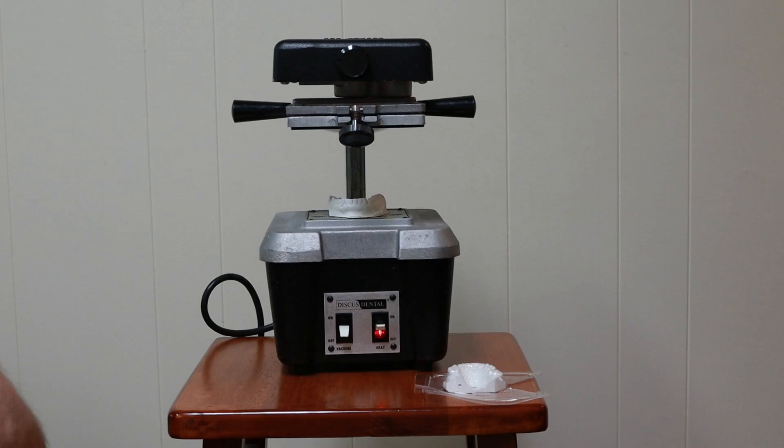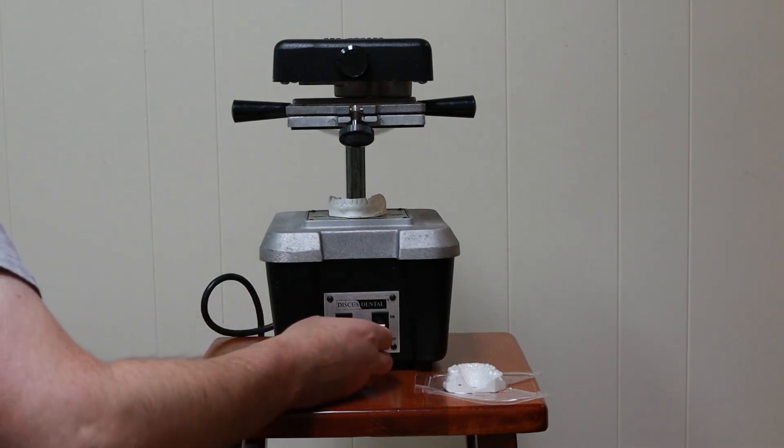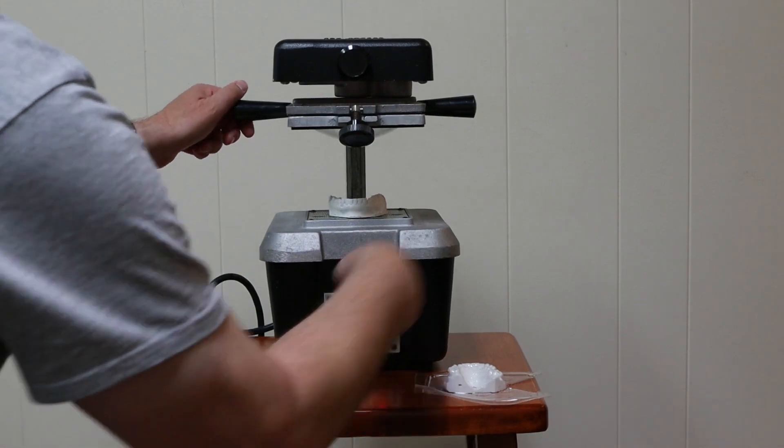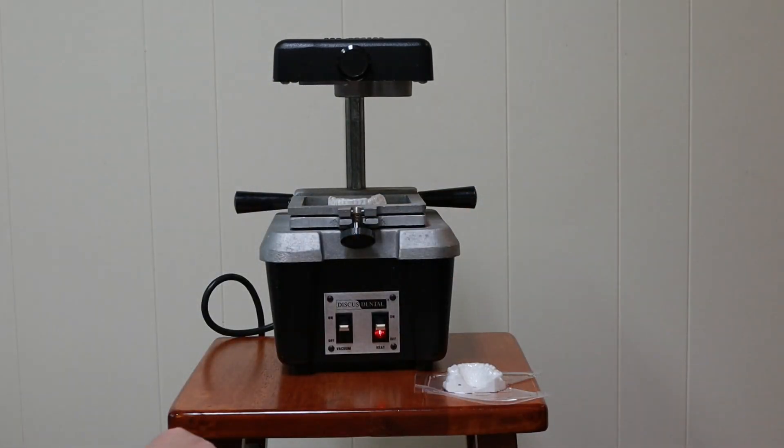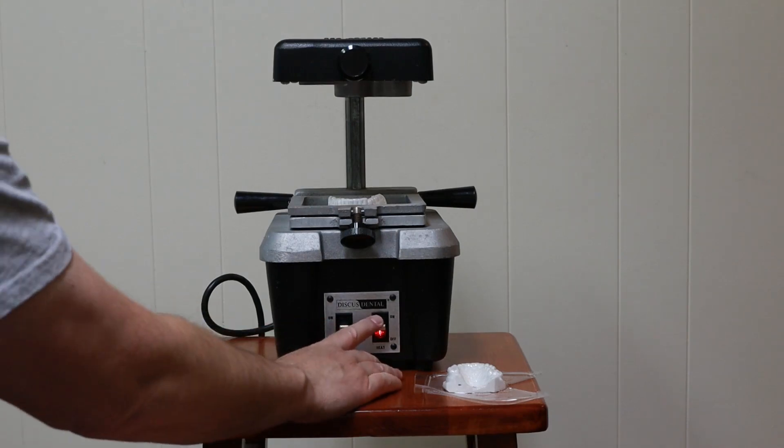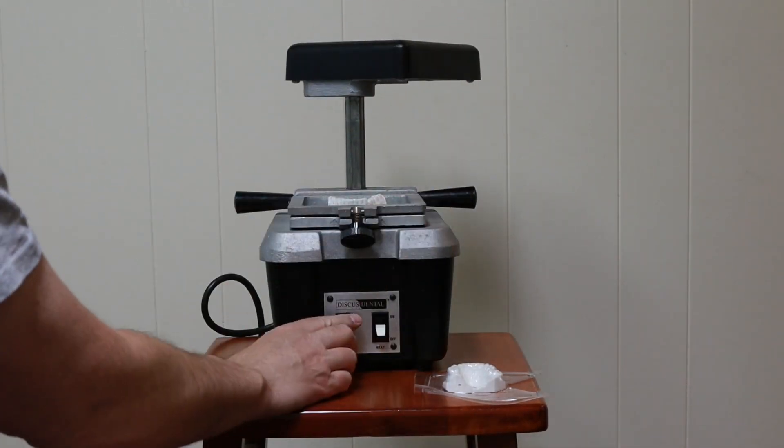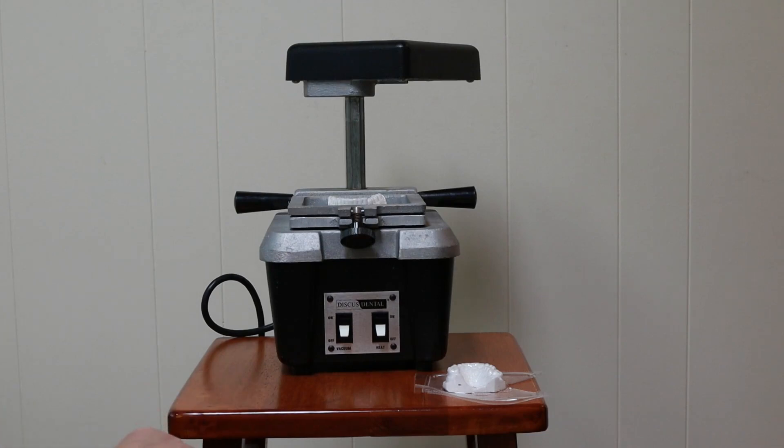Alright, we're getting a sag. When it gets to sag about an inch, there we go. Turn the vacuum on. Drop the tray, let it run. Turn the heat off. Let's take that out of the way. Turn the vacuum off.